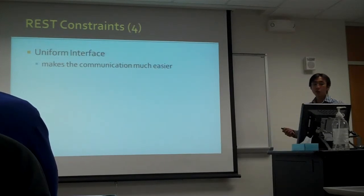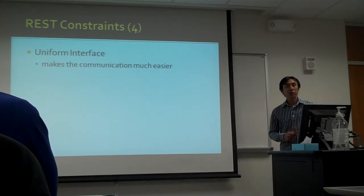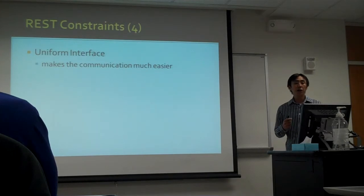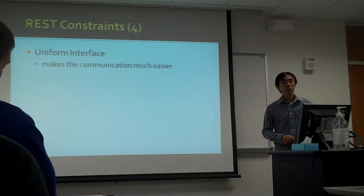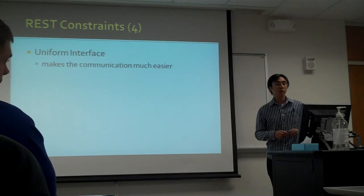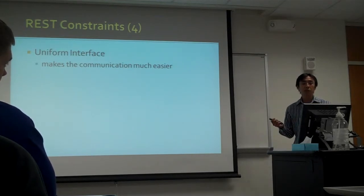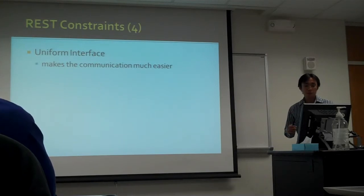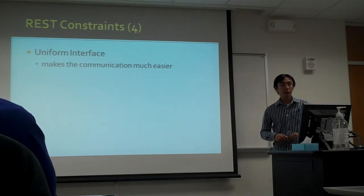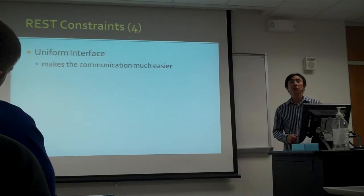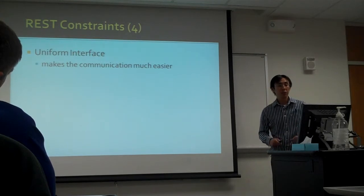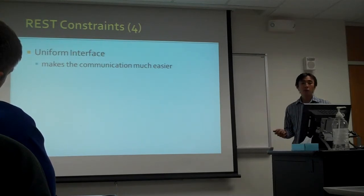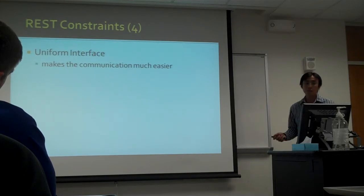The uniform interface constraint. When a system consists of many components, the communication between them becomes difficult — components must know the structure and protocol of communication. By having a uniform interface, the components do not have to understand application-specific semantics, which makes communication much easier.